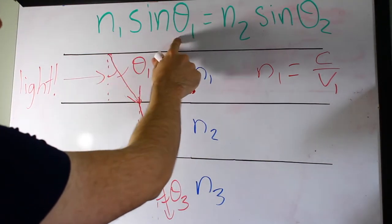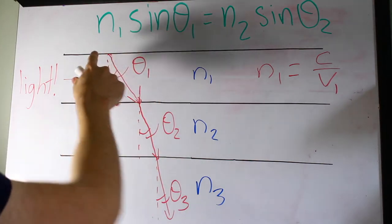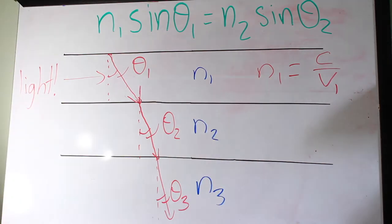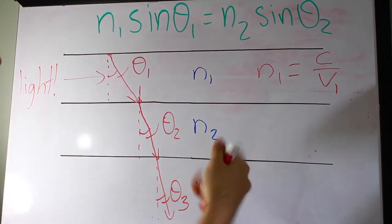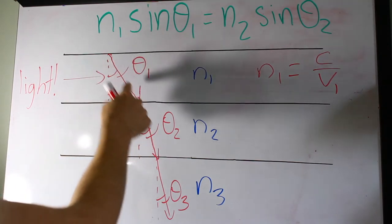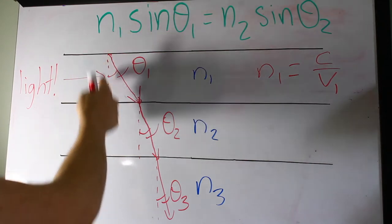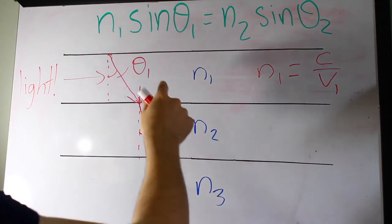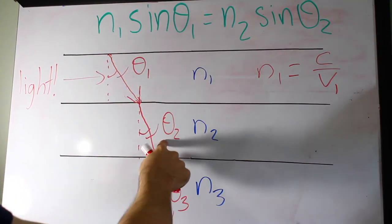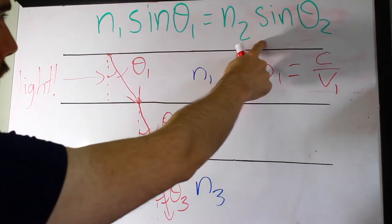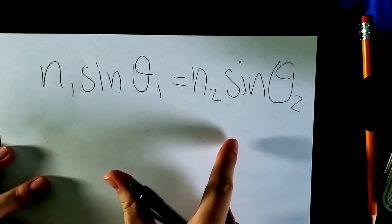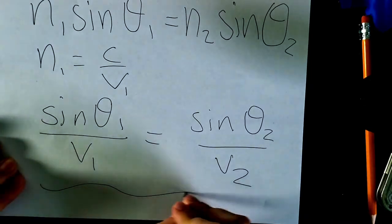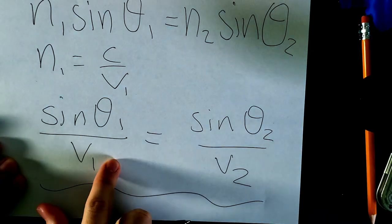This is Snell's law: n1·sinθ1 = n2·sinθ2. Here n is the index of refraction, which is just c over v, where c is the speed of light in a vacuum and v is the speed of light in the medium — air, water, glass, or any material light can travel through. A light ray travels through a medium at some angle from the normal line, which is perpendicular to the layer boundaries. Snell's law lets you calculate θ2, the new angle with the normal, whenever light enters a new medium.